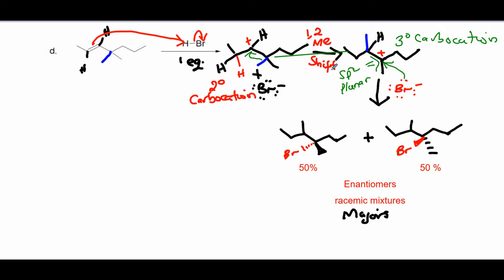In shifting, you only shift once — don't keep shifting. Since you lost the Br⁻ during the addition of HBr to form the carbocation, the bromide is still in the solvent medium and will attack the positively charged carbon either from the top face or bottom face, because this carbon is sp2 hybridized and planar.